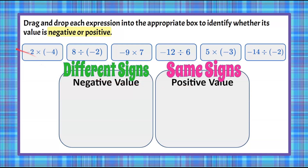We start with our first: negative 2 multiplied by negative 4. Both values are negative, meaning they have the same sign, so we're going to relocate that right here. Negative 2 times negative 4 will have a positive value.